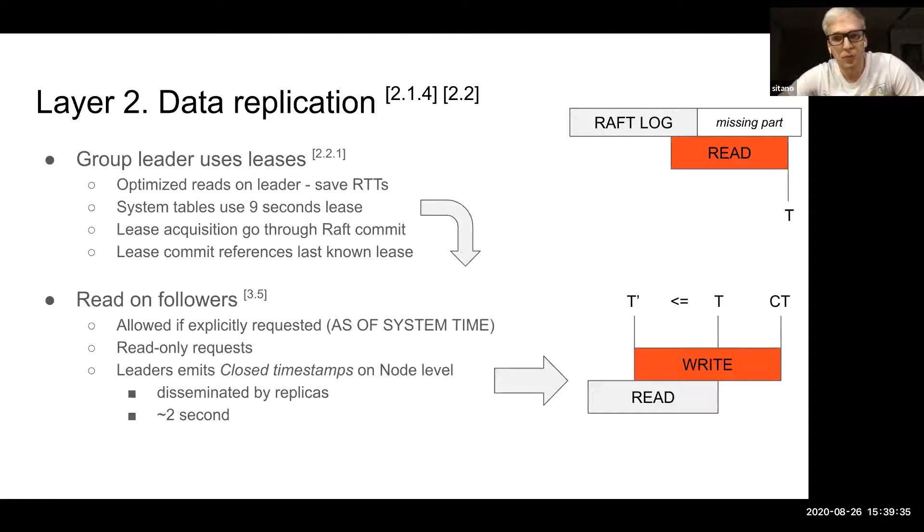CockroachDB uses an optimization called group leader leases to save the round trips for the reads. With that optimization, it can serve reads directly from the leader of the group which holds current leases. The main invariant which the CockroachDB system provides is that the leases are disjointed under any conditions.